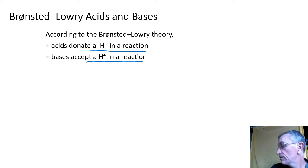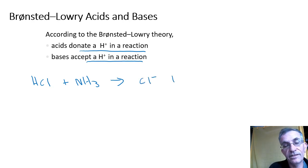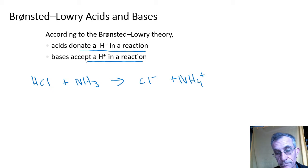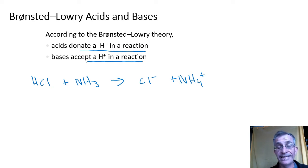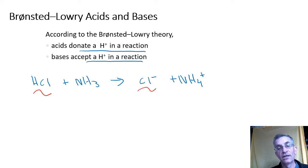Let's do an example. We have HCl and NH3 reacting together to make Cl⁻ and NH4⁺. Somebody is giving up a hydrogen — that's the acid — and somebody is taking the hydrogen — that's the base. Let's start with HCl: if we find what it turned into on the right-hand side, it turned into Cl⁻, so it lost a hydrogen in this reaction.